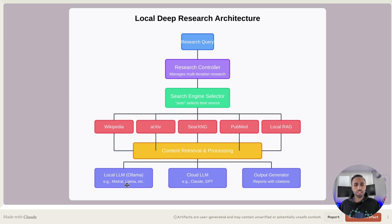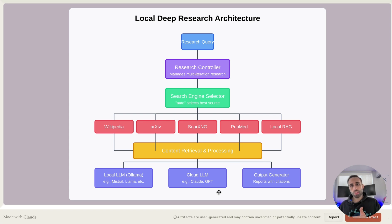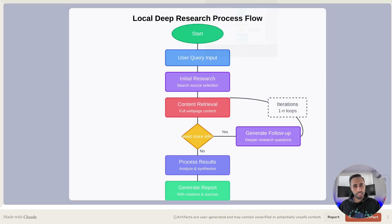Last but not least, you can have it all end-to-end with a local language model — for this demo we use Ollama to pull Llama — or you can have that connected with cloud language providers like Claude, GPT, Gemini, and so on. And then lastly, you have the output generated for you, which can also be downloaded as a PDF.